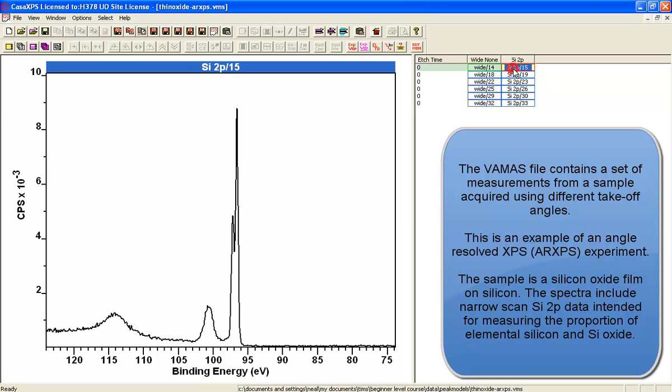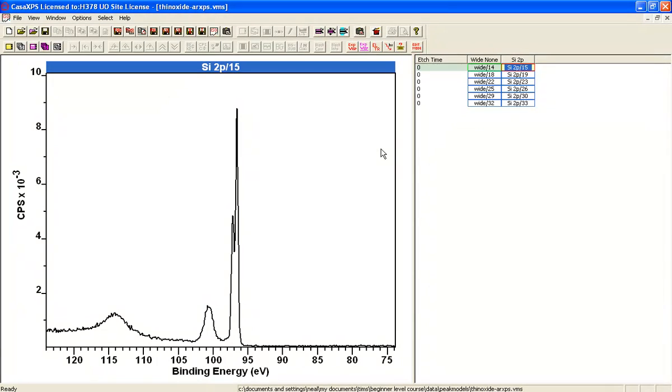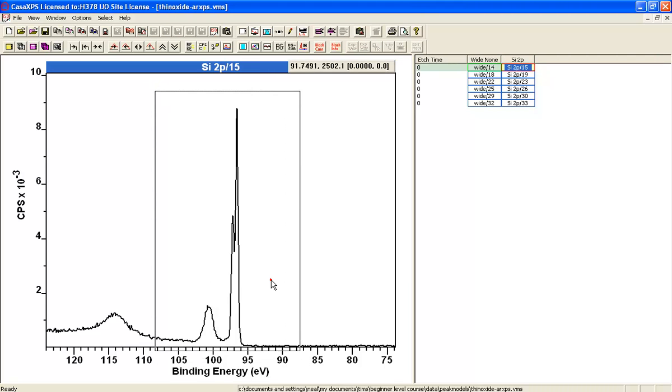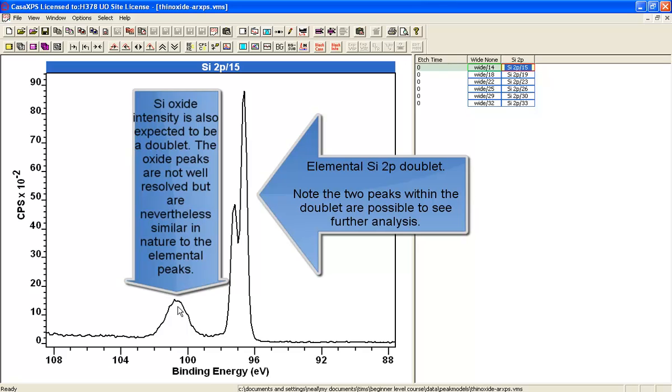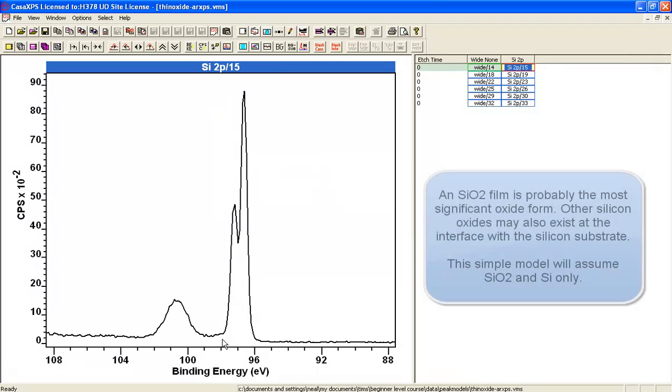We will create a peak model for the silicon 2p spectrum you see here. This is a nice simple one to start with because we've got an elemental peak and an oxide peak, and we need to create at least two doublet pairs, possibly more, to represent these data.